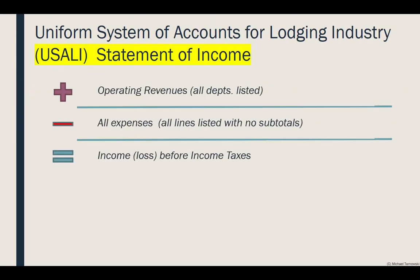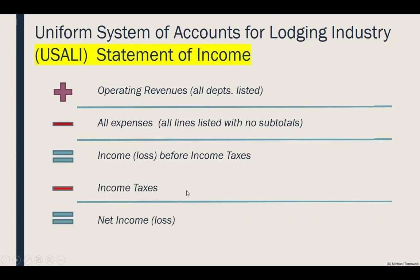You'll see all operating revenues with all departments listed, followed by the subtotal, then minus all expenses with no intermediate subtotals — including amortization and depreciation. From that you'll find your income or loss before income taxes. Because depreciation and amortization are included, this will typically be a lower number than on your summary operating statement. We then calculate income taxes and subtract them — if there is a loss, no income taxes are paid — and from that we find the net income for the hotel.